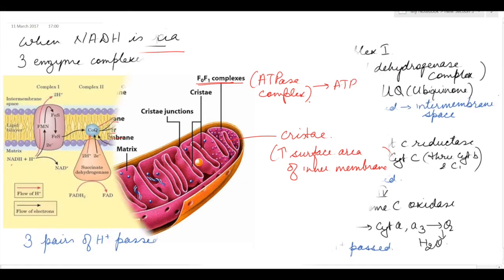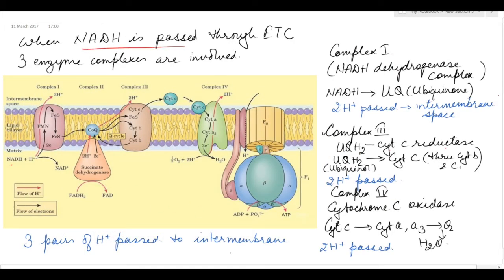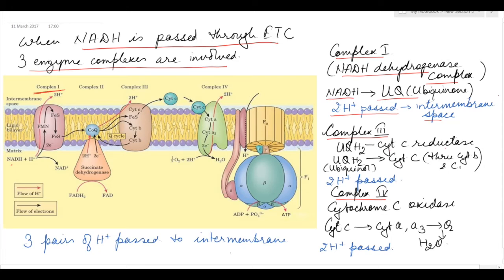When NADH is passed through the electron transport chain, three enzyme complexes take part: Complex 1, Complex 3, and Complex 4. Complex 1 is NADH dehydrogenase complex, which catalyzes the transfer of electrons from NADH to ubiquinone. The NADH produced during various reactions is passed through Complex 1 — from FMN to iron-sulfur centers, then to ubiquinone — pushing two protons into the intermembrane space.